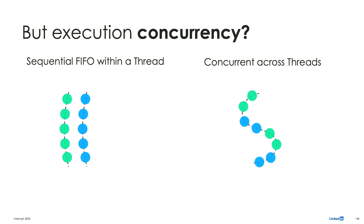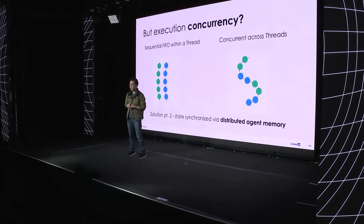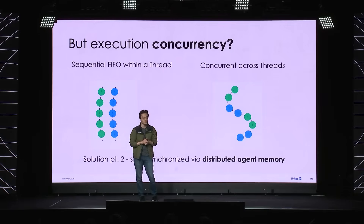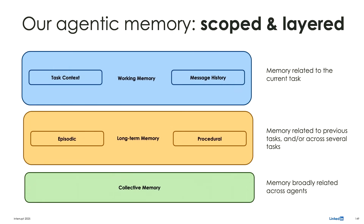That covers how agents can talk to each other, but it doesn't cover how agents can make sure tasks are done in the right order. So the second part of our solution was to specifically build memory catered for agents. Our agentic memory is both scoped and layered — there's working memory, long-term memory, and collective memory, each providing different functions. For a new interaction, you'd fill out working memory. But over time, as the agent has more interactions with a particular user, more memory will be populated to long-term memory.